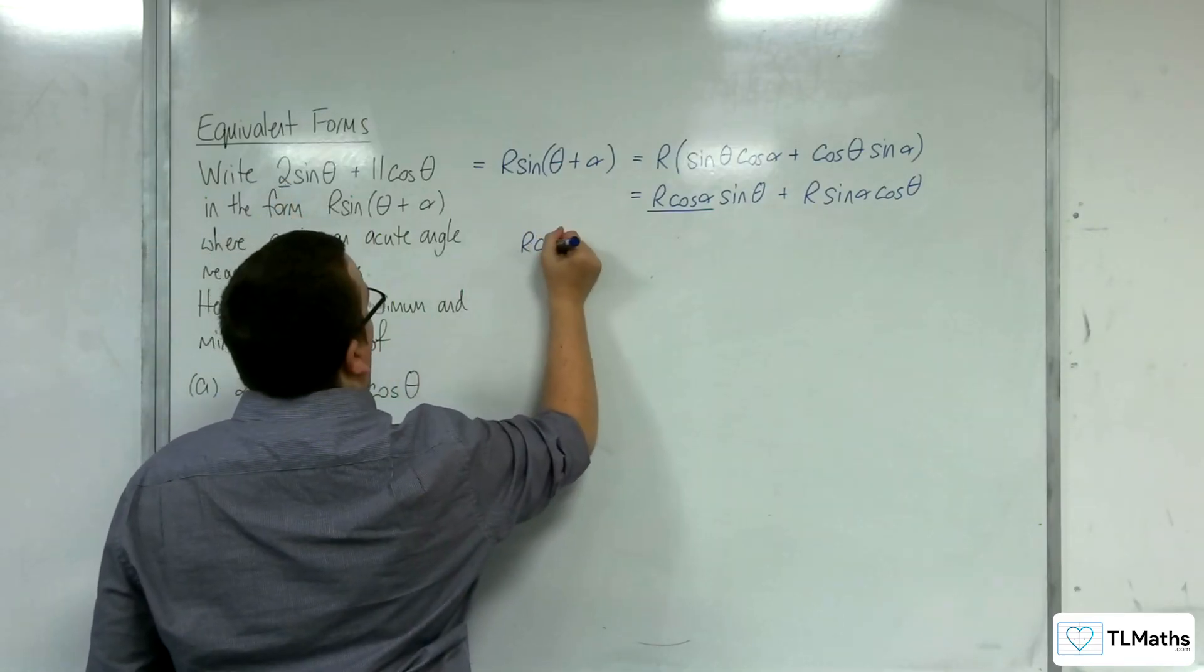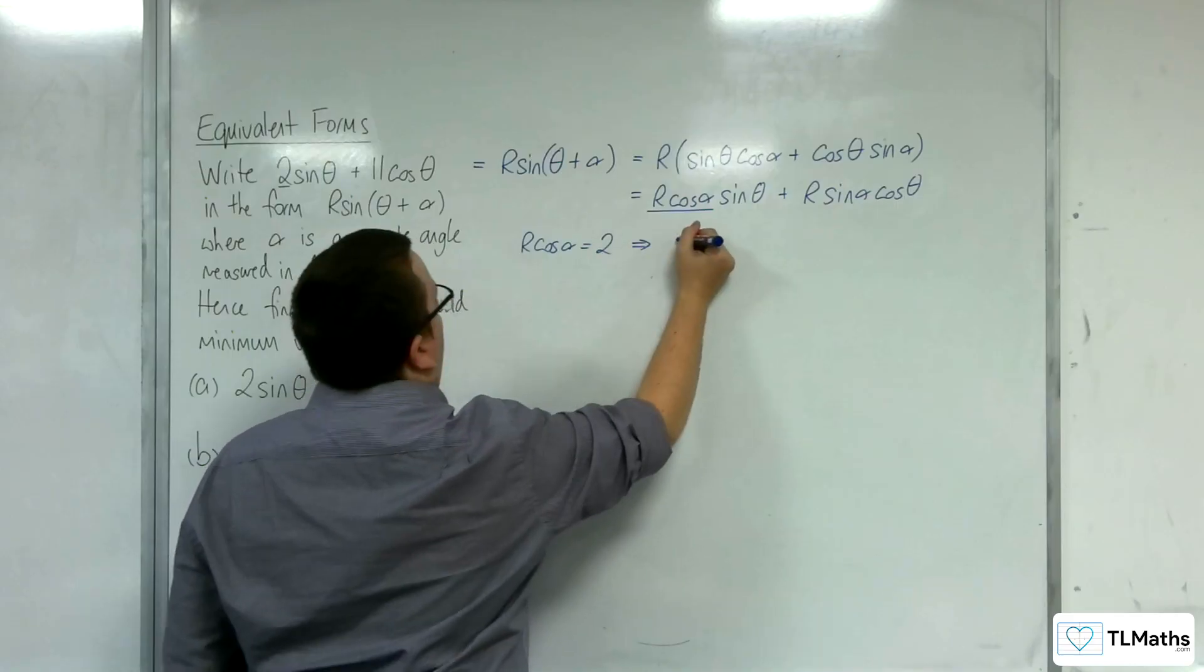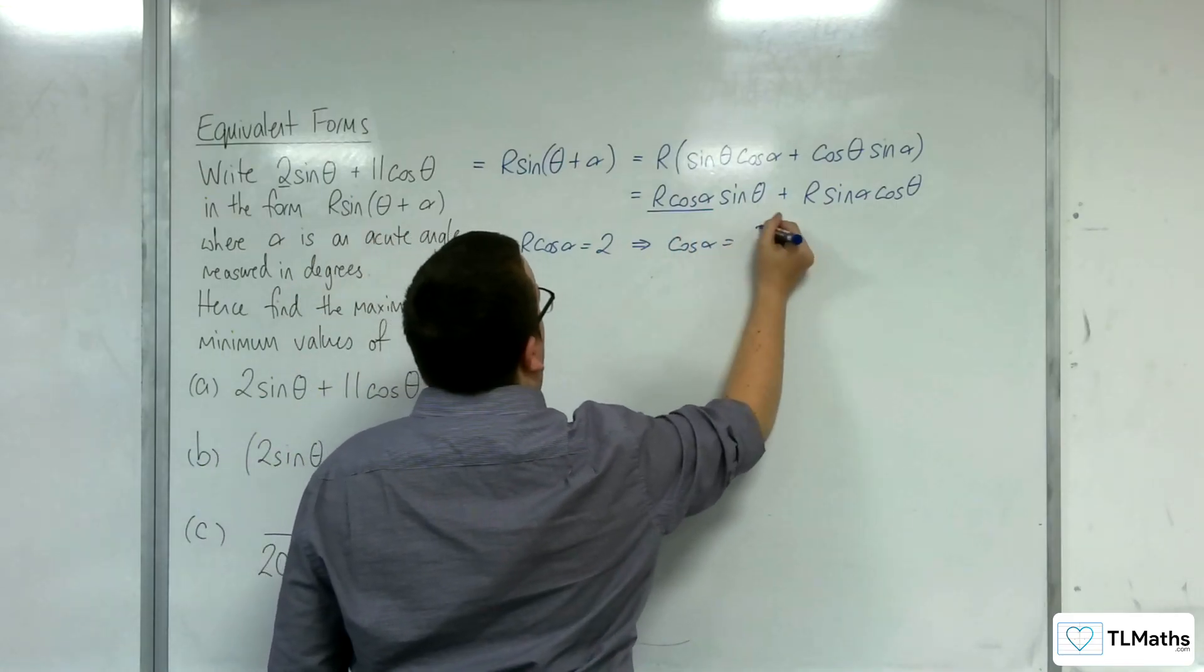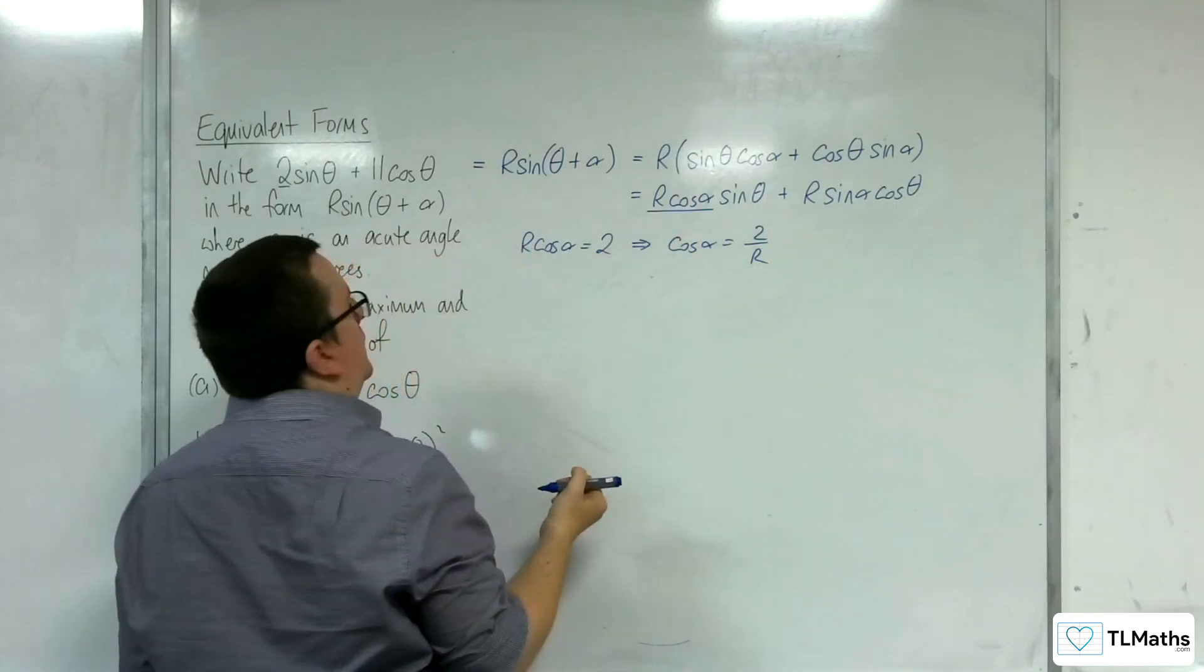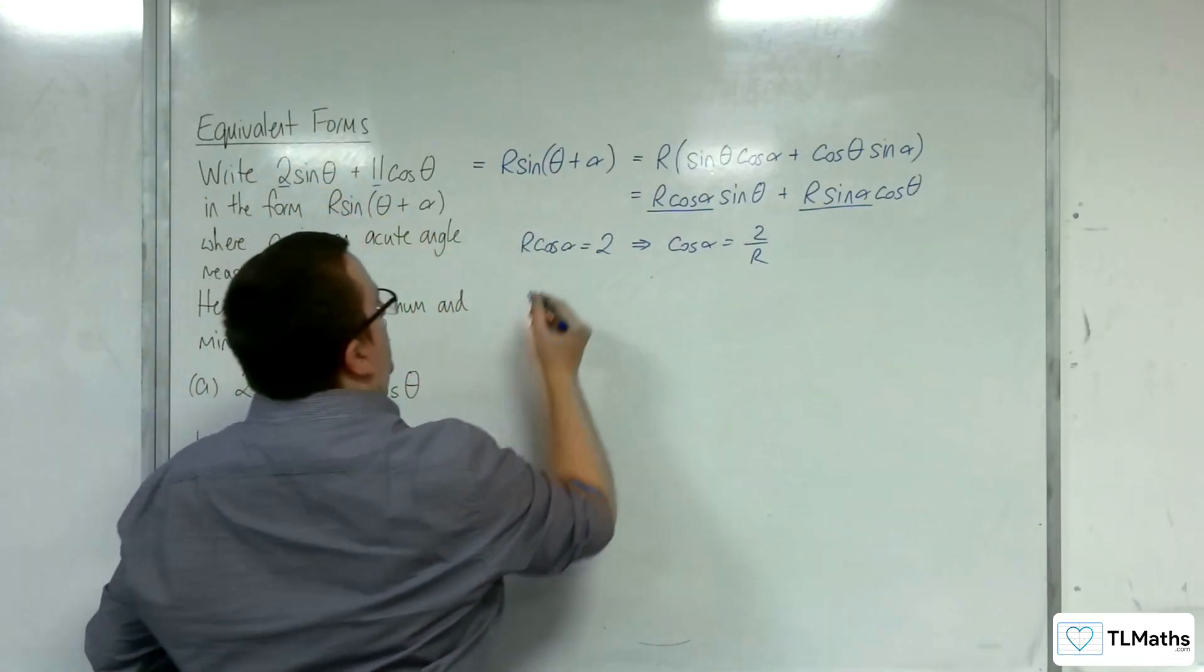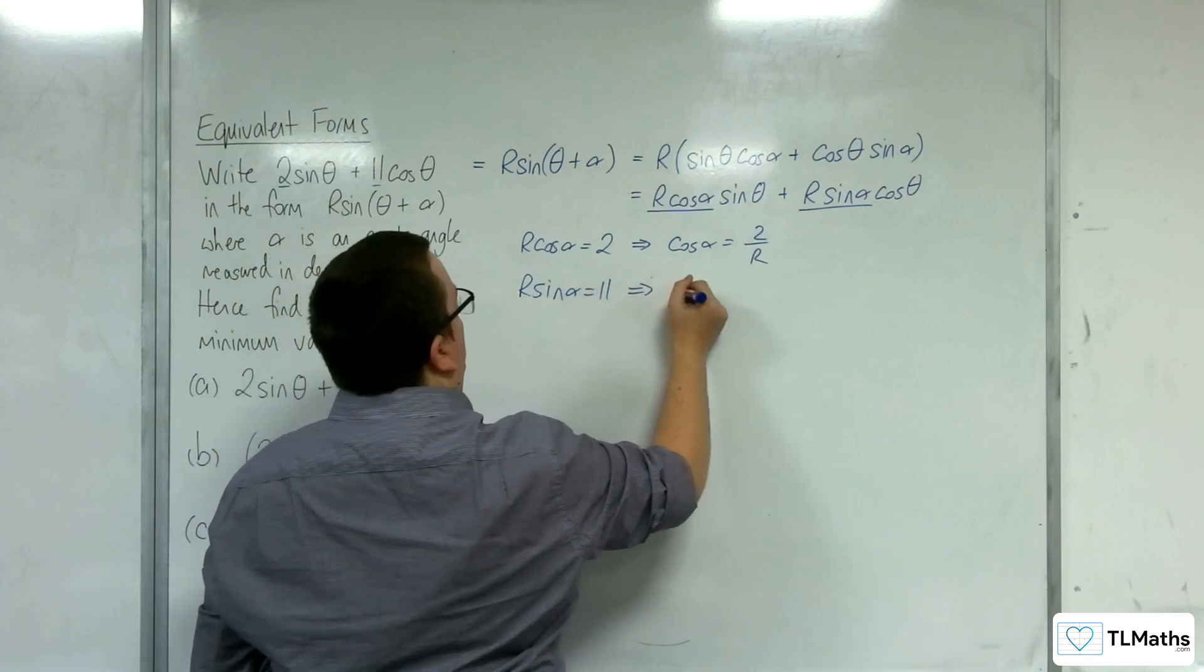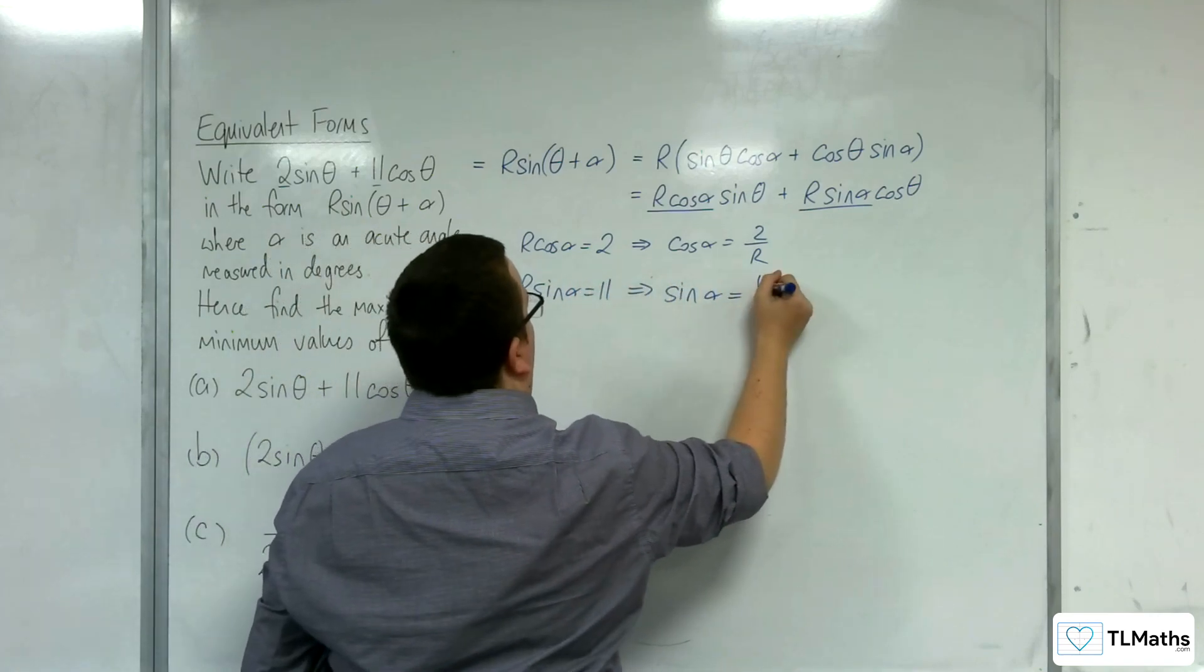So R cos alpha is equal to 2, which implies that cosine alpha is 2 over R. The R sine alpha is what is in front of the cosine, so that must be what the 11 is. So R sine alpha must be 11. So sine alpha must be 11 over R.